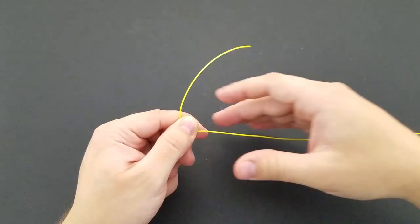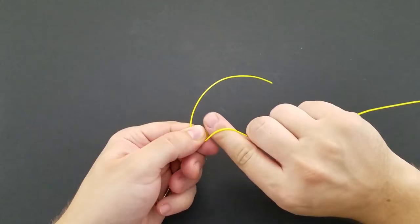Now with the tag end, you're going to wrap it around your main line. With the thicker line, I like to do about 4 to 6 wraps and with the lighter line, 6 to 10 wraps.